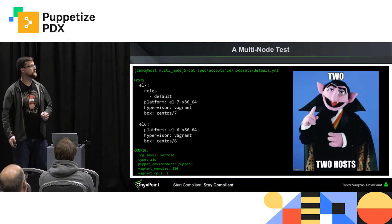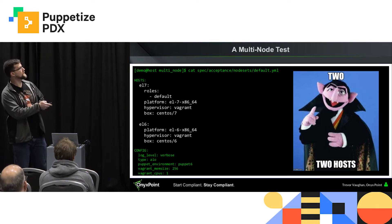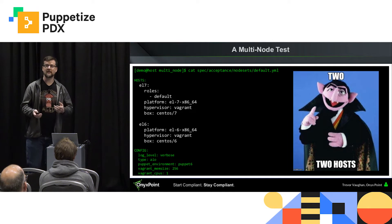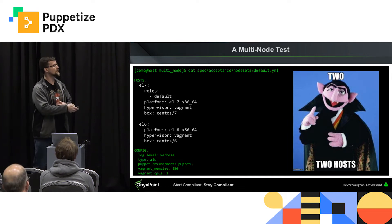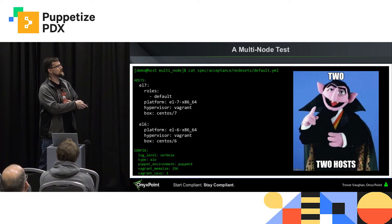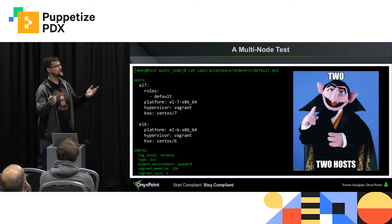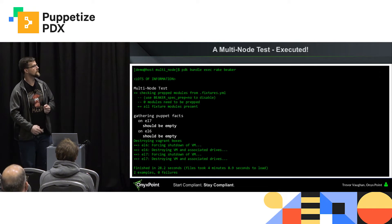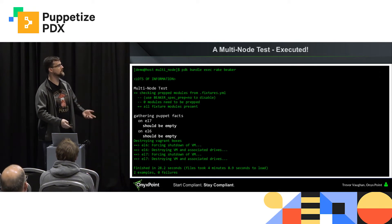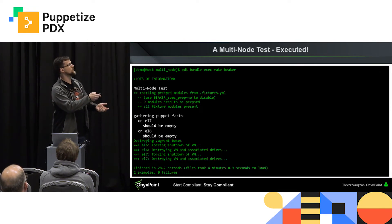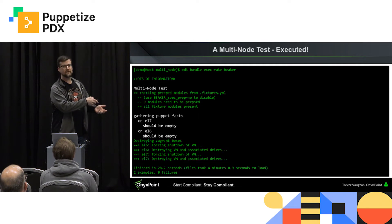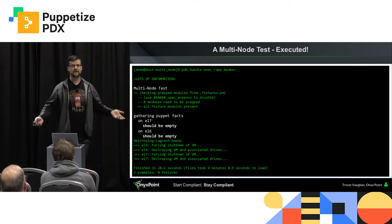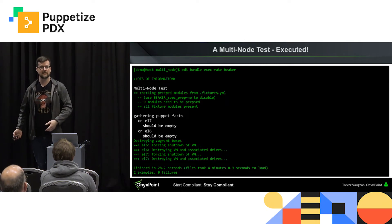Moving on to a multi-node test, which is actually what we're here for. Updating the default.yaml, we've now added a second host which is EL6 — I want to check whether EL7 and EL6 can do the same thing correctly. The updates are platform EL6 instead of EL7 and box is SIMP/06. We run it and now: 'multi-node test, gathering facts on EL7 should be empty — got it; on EL6 should be empty — got it. Success.' We now know our code works on both EL7 and EL6.